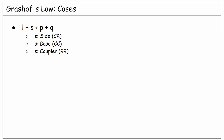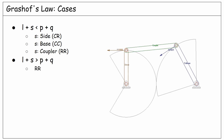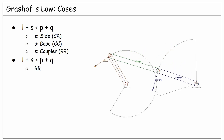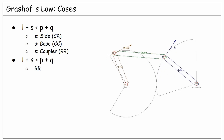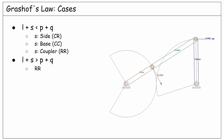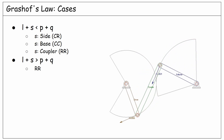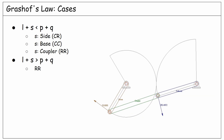Going to the next case, if the longest plus shortest is greater than the summation of the lengths of the other two links, in any case we must expect a rocker-rocker motion, as you see in this example. For the driver link, either of the two deadpoints happens when the coupler and the follower are aligned. For the follower link, one of the endpoints happens when the driver and the coupler become aligned, and the other endpoint happens at one of the deadpoints of the driver link.